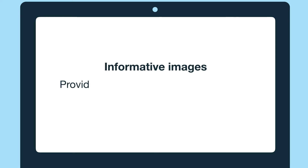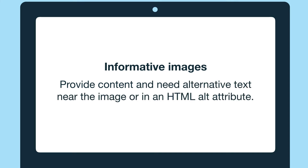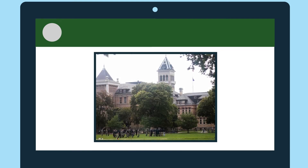When it comes to alternative text there are three types of images. The first are informative images. These provide content and need alternative text near the image or in an HTML alt attribute. For example, let's say I was writing content about university life on campus and was talking about popular spots on campus. I used this image to show the quad.